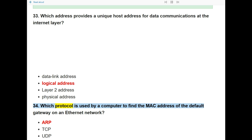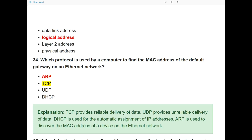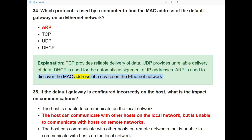Question 34: Which protocol is used by a computer to find the MAC address of the default gateway on an Ethernet network? The answer is ARP. TCP provides reliable delivery of data. UDP provides unreliable delivery. DHCP is used for automatic assignment of IP addresses. ARP is used to discover the MAC address of a device on the Ethernet network.